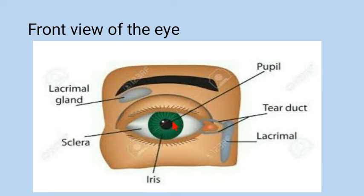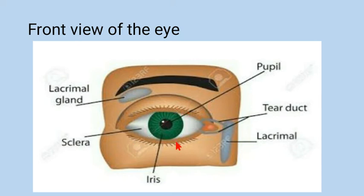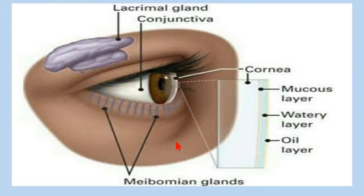The hole in the center of the iris is the pupil. On the upper end of the eye, the lacrimal gland is present. It is an exocrine gland, so it pours its secretions by means of a tear duct. This is the upper eyelid and the lower eyelid, which consists of a layer of eyelashes. This is the side view of the eye; the sclera is surrounded by a transparent layer known as conjunctiva.